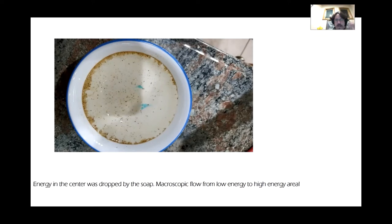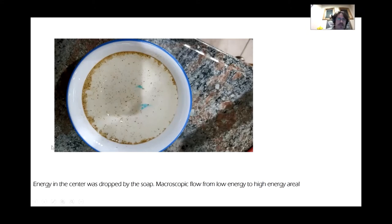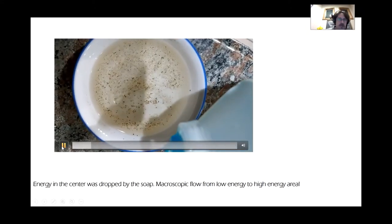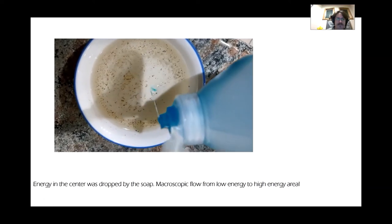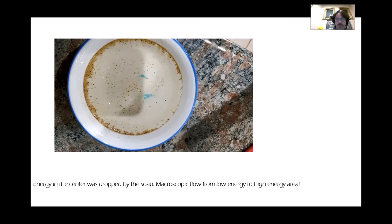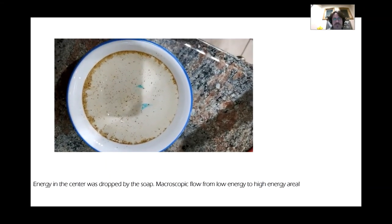When the soap was dropped in the center, the pepper all went to the edge and started going down on the side of the bowl. The energy in the center was dropped by the addition of soap. When you have energy gradients like this, you get macroscopic flow phenomena from the low-energy area to the high-energy area, so all the pepper flows outward. You can do this at home with pepper, oregano, or anything that floats.